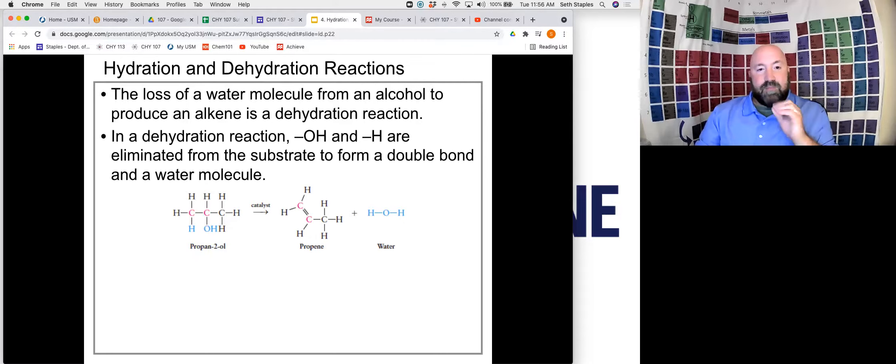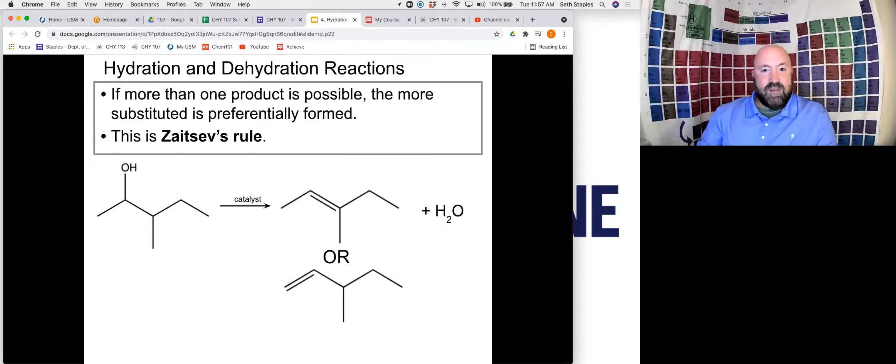Now, sometimes there may be an option to form more than one product, and we can see that here. So we can see with this compound here, we're going to remove this OH, and we could remove a hydrogen from this carbon or this carbon. If a hydrogen from this carbon here is removed, then we're going to end up with our double bond between these two, as we see here. However, if a hydrogen is removed from this carbon instead, then we could end up with this double bond forming here. So either one of these could be possibilities.